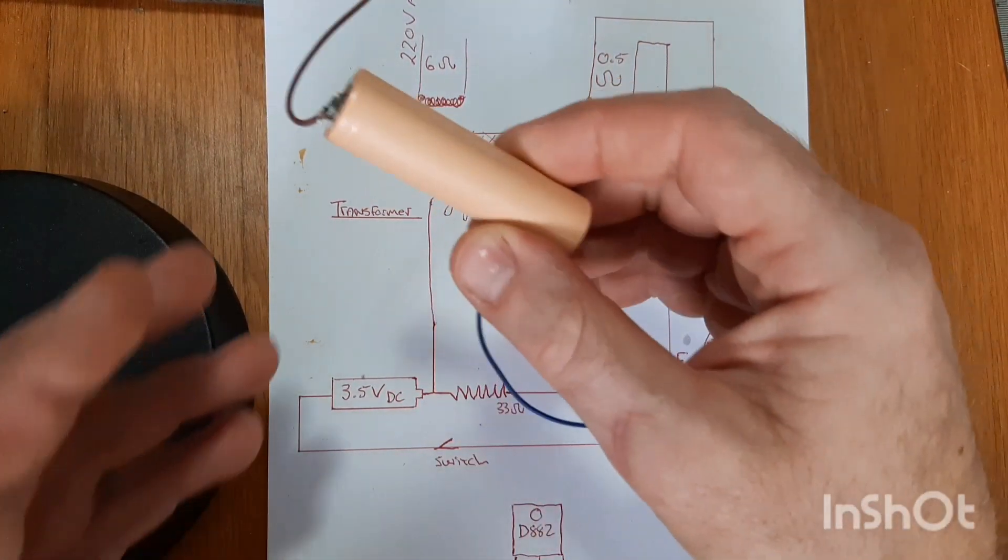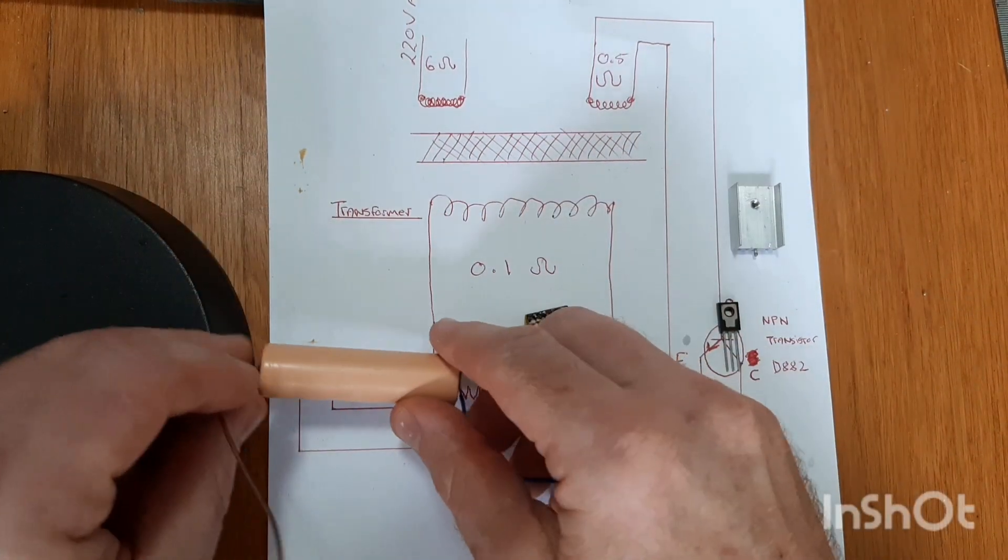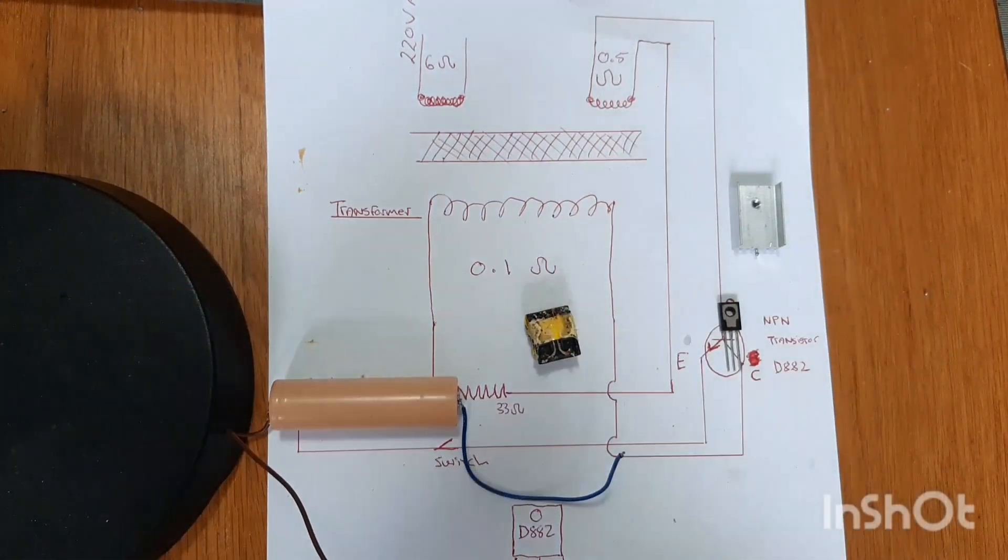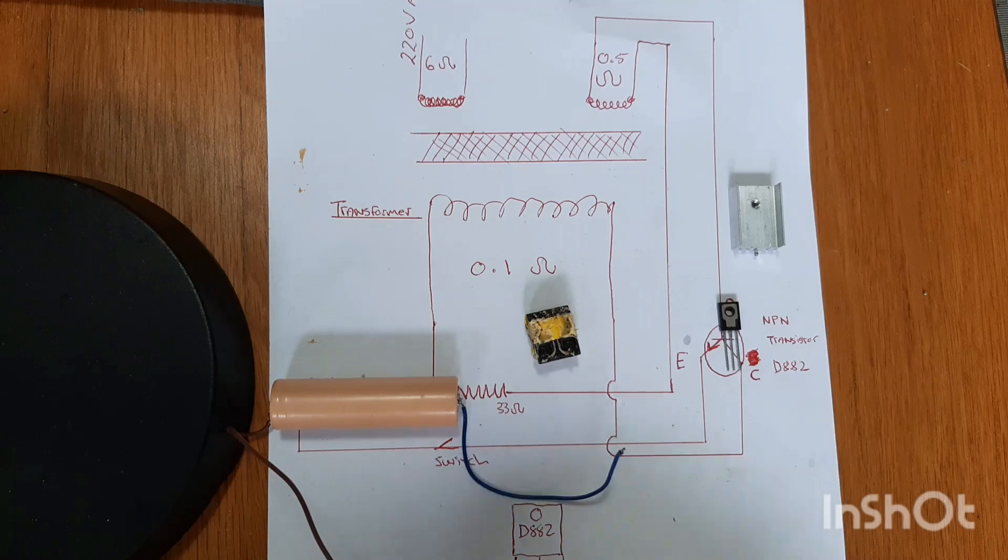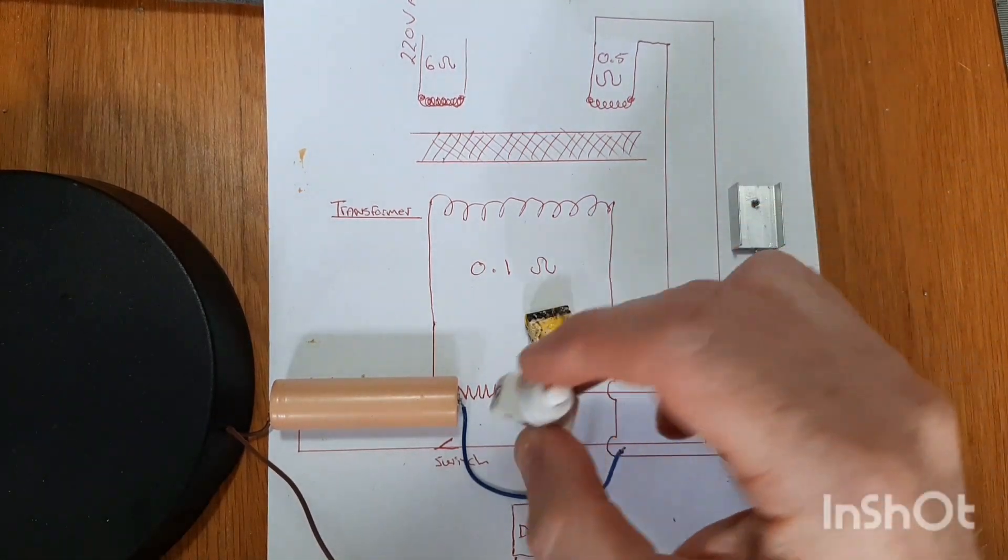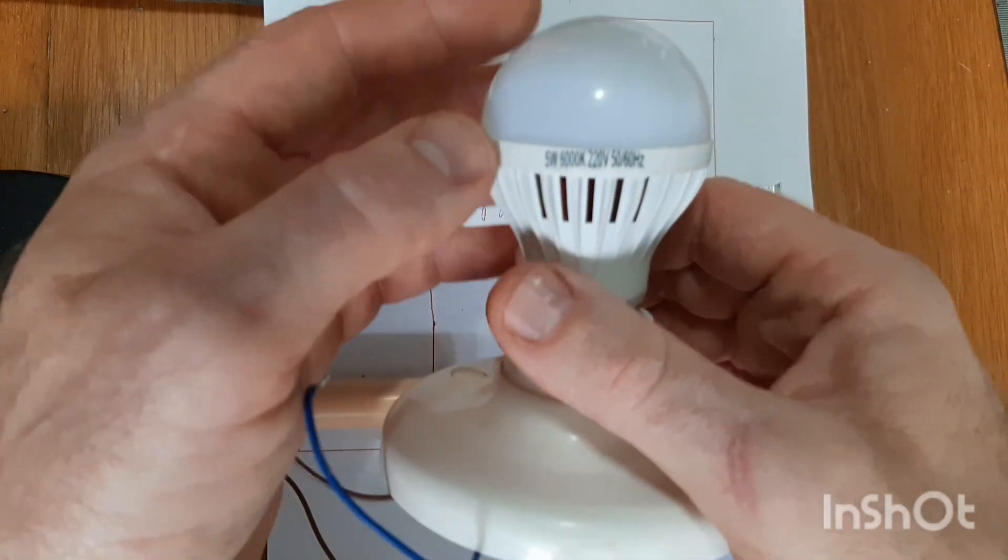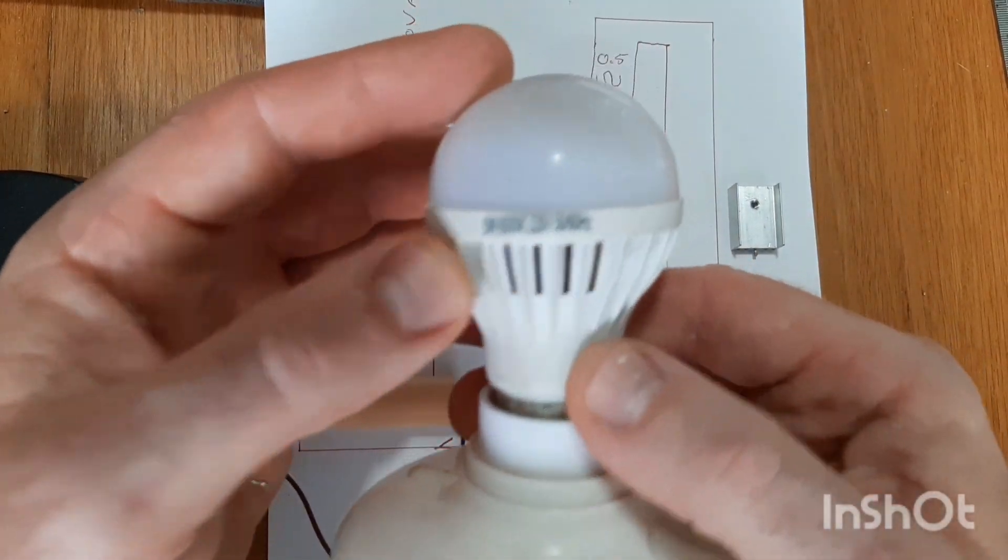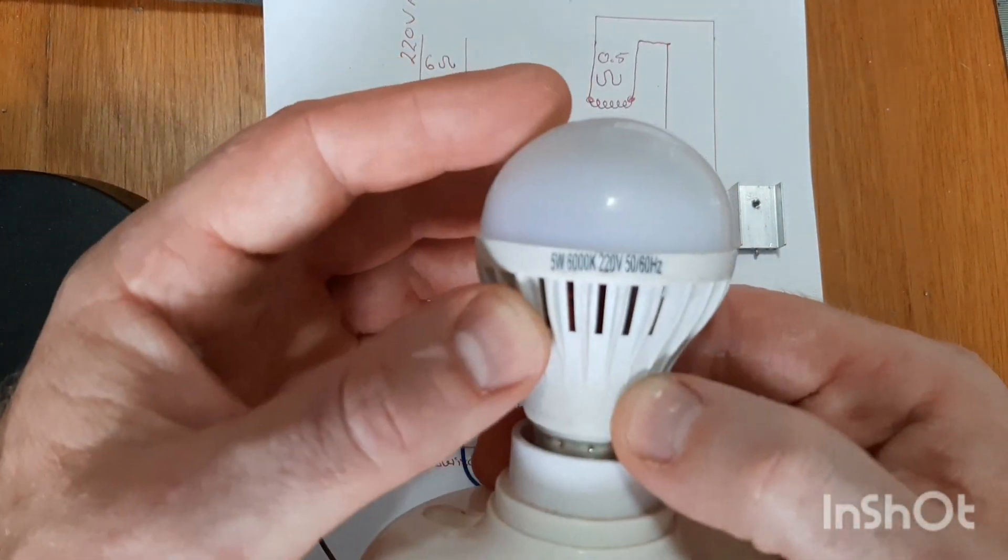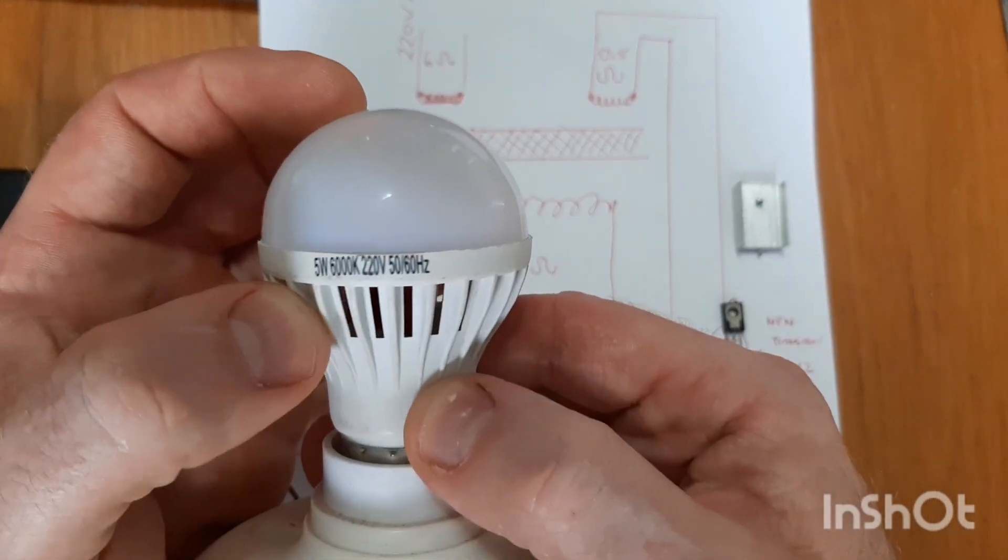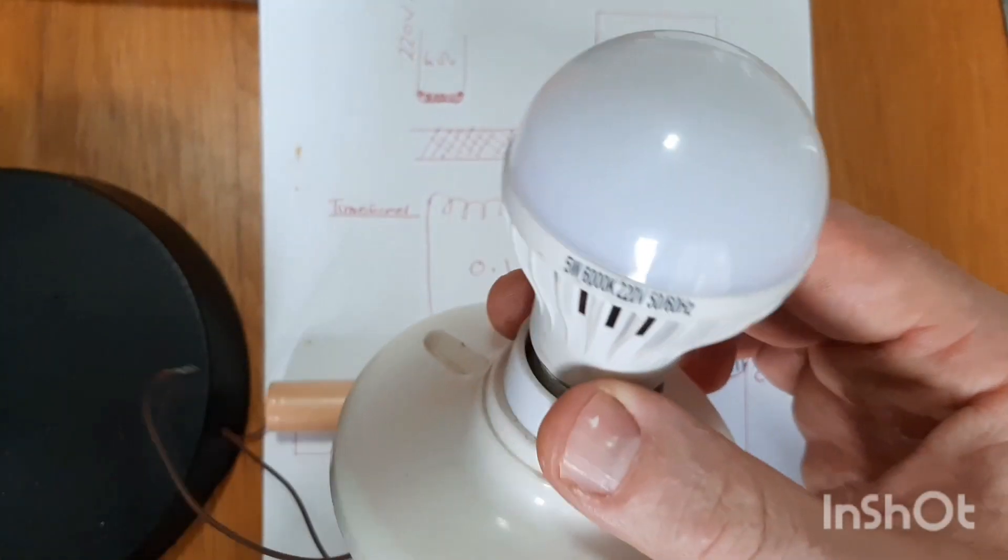You're going to need a 3.5 volt battery. All three volts, doesn't matter. Then we need a switch. And then we need our 220 volt AC night bulb.